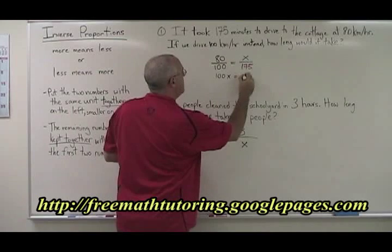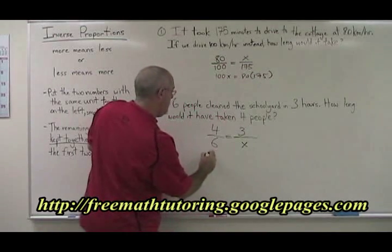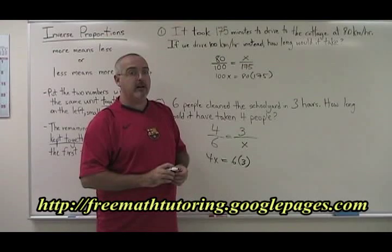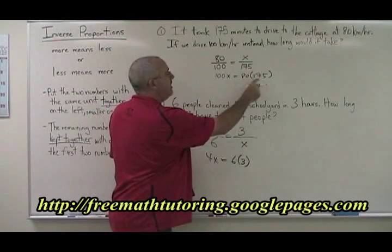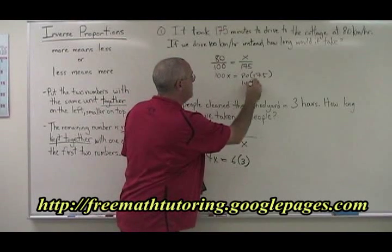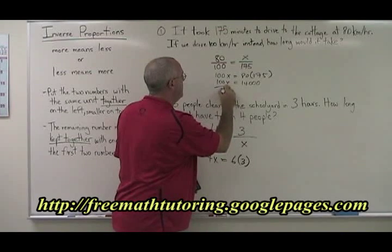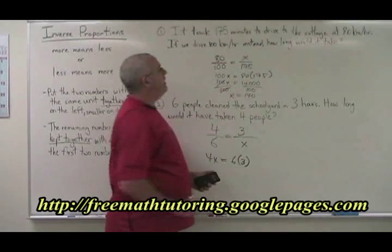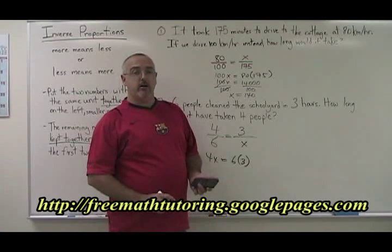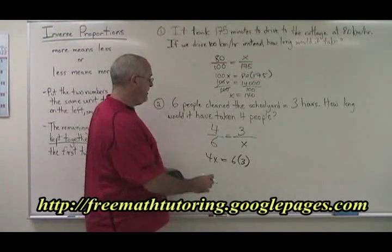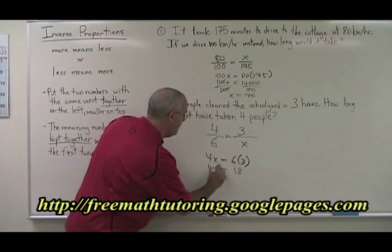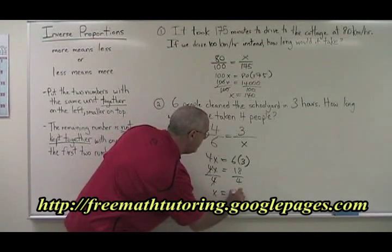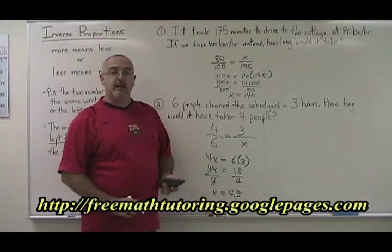Let's solve these questions. For example one: 100x equals 80 times 175. 80 times 175 is 14,000, so x equals 140. It would take 140 minutes to drive to the cottage at 100 km per hour, and that answer makes sense. For example two: 4x equals 6 times 3, which is 18, so x equals 4.5. It would take 4.5 hours for four people to clean the entire schoolyard.